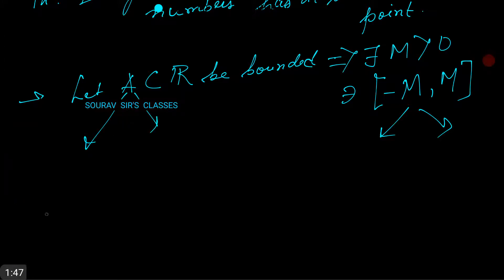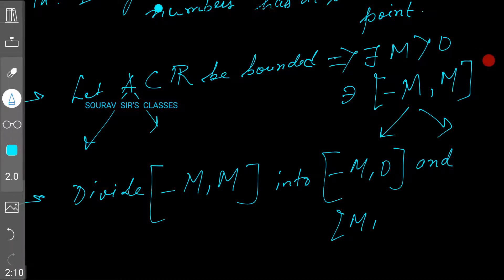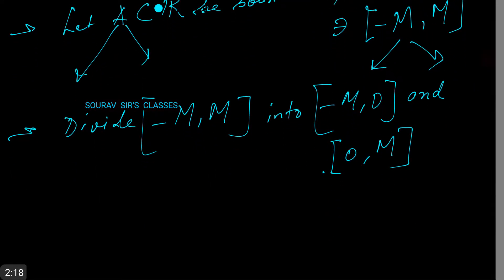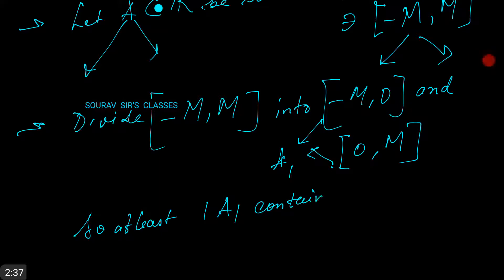We divide the closed interval [-M, M] into [-M, 0] and [0, M]. At least one of these halves — let's call it A₁ — contains infinitely many points.